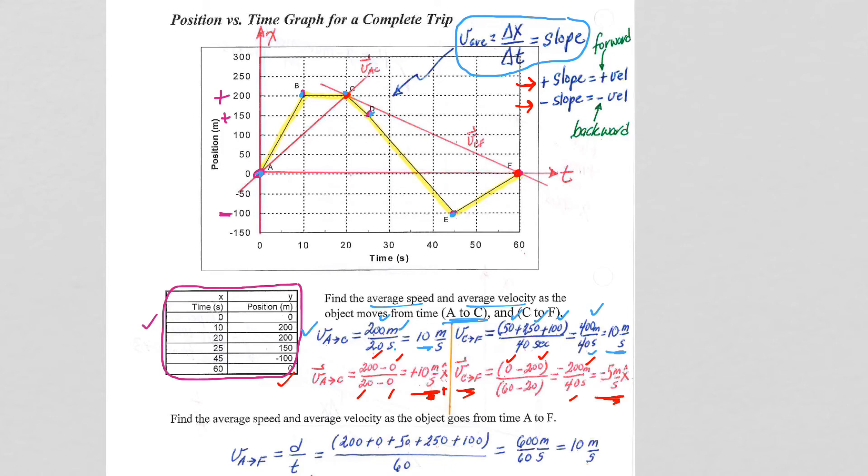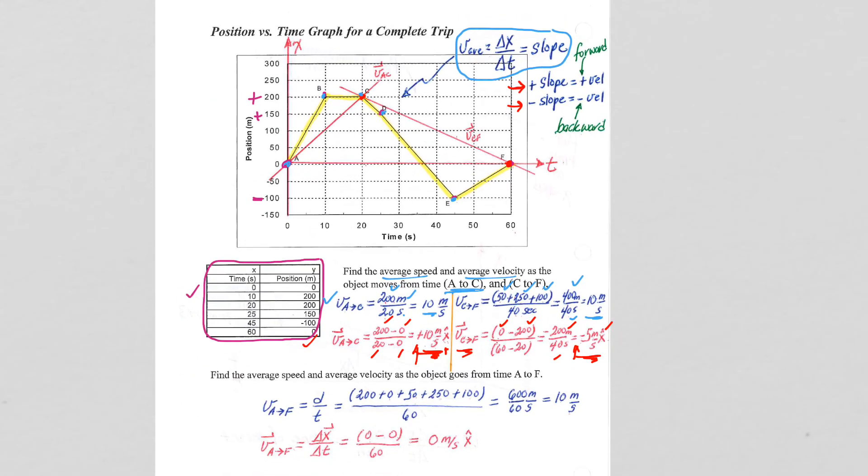And notice when we calculated it numerically, we got exactly the result we knew we would get relative to the two time intervals. Shallower slope, smaller average velocity. Negatively valued, negatively valued because it was a negative slope. Positively valued slope, steeper value, positive 10, so we are consistent with what we know is occurring.